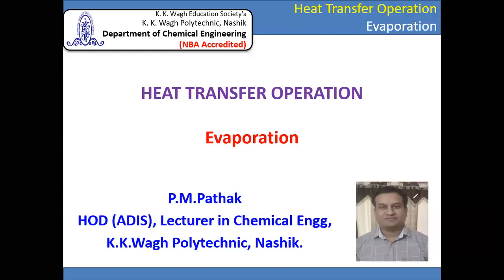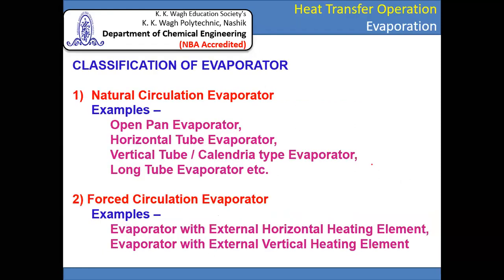Hello friends. In this presentation, we are going to discuss about evaporation, that is types of evaporator. The equipment which is used for evaporation is called an evaporator. The classification of evaporators: generally they are classified as natural circulation evaporator and forced circulation evaporator.